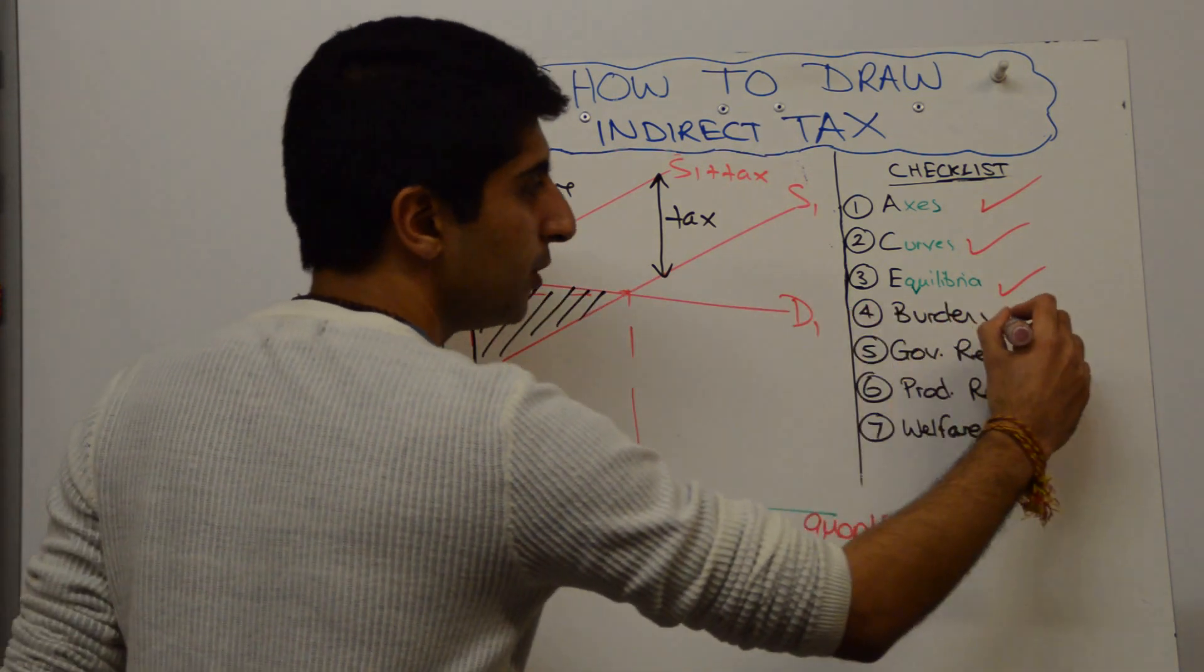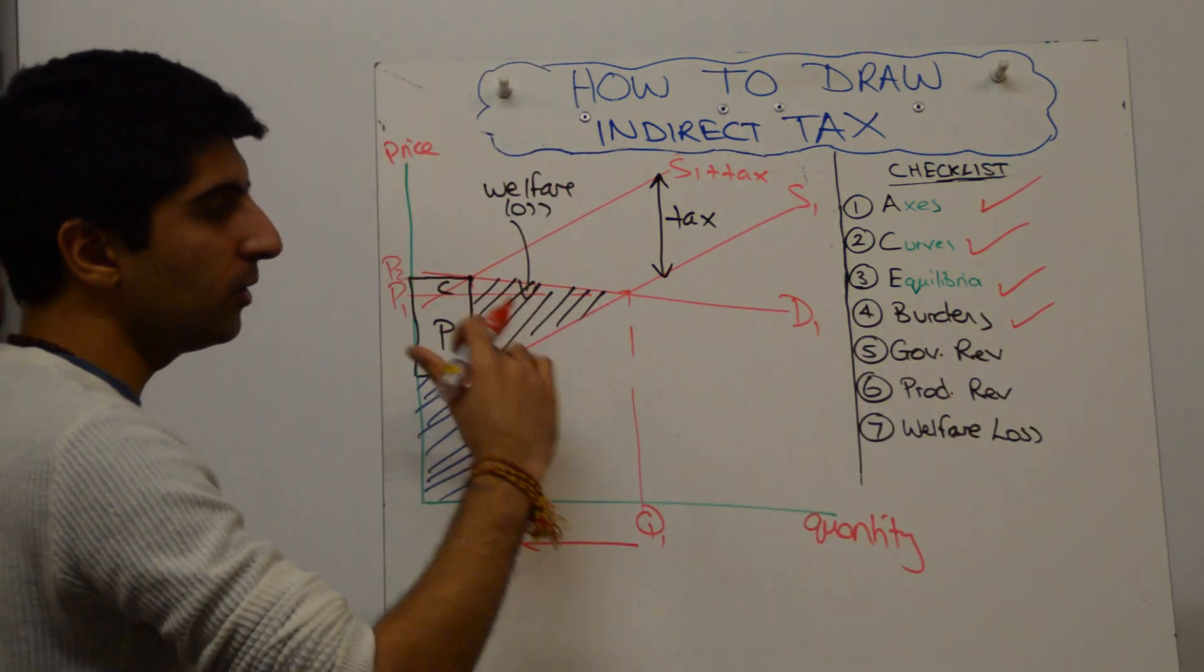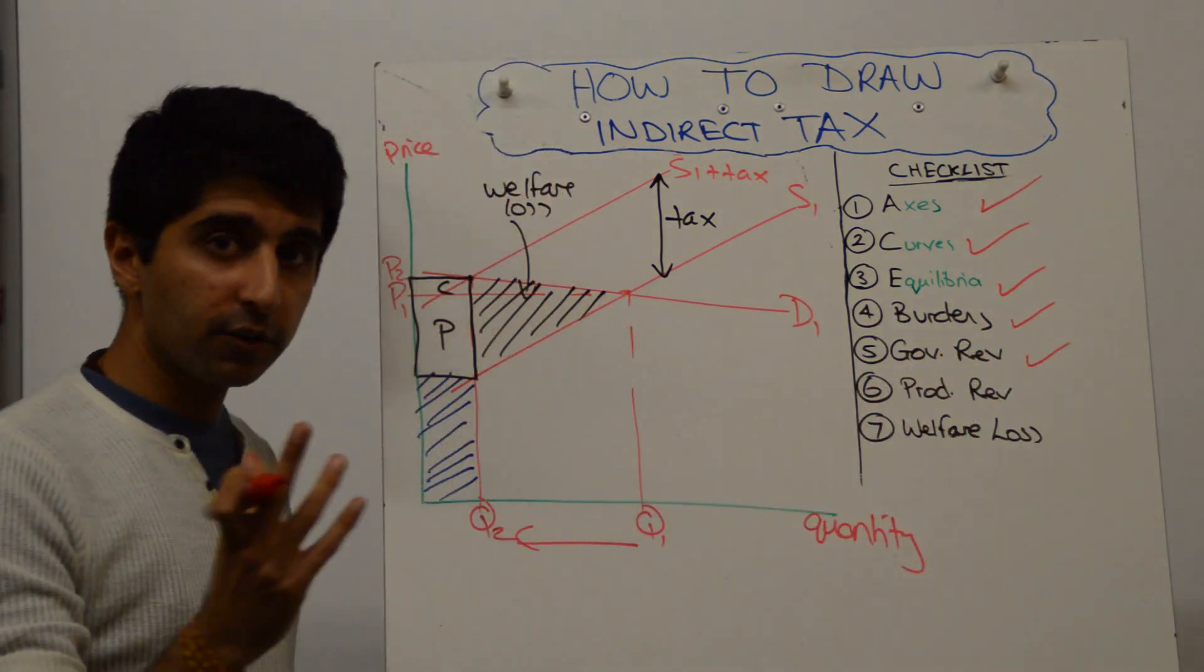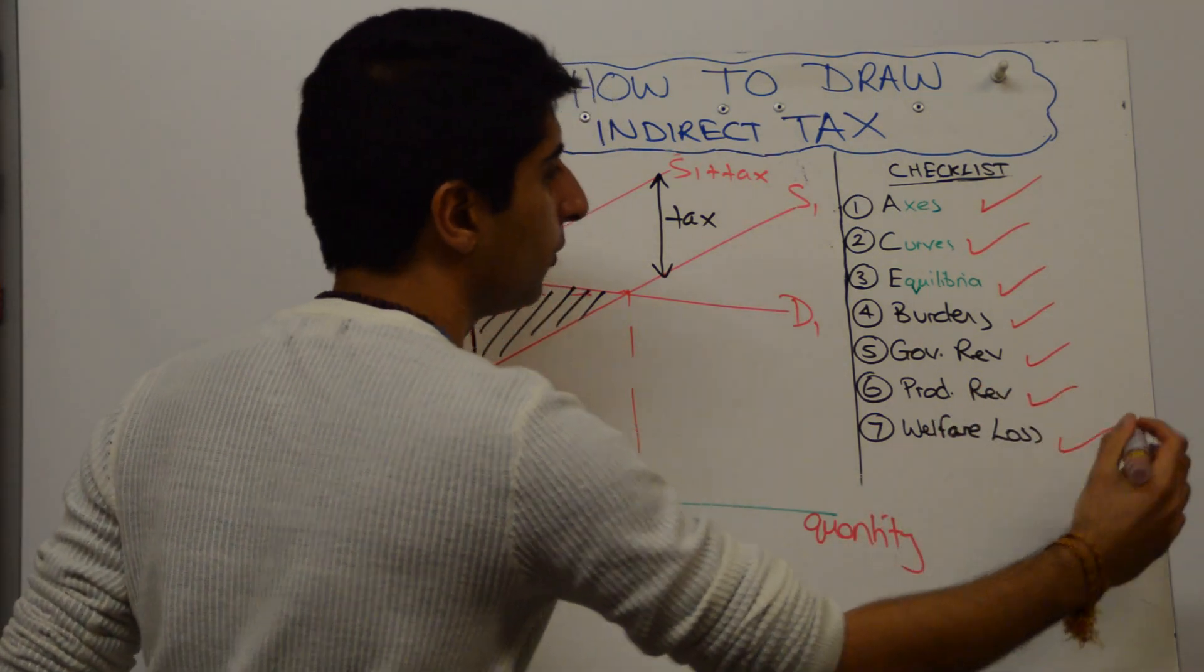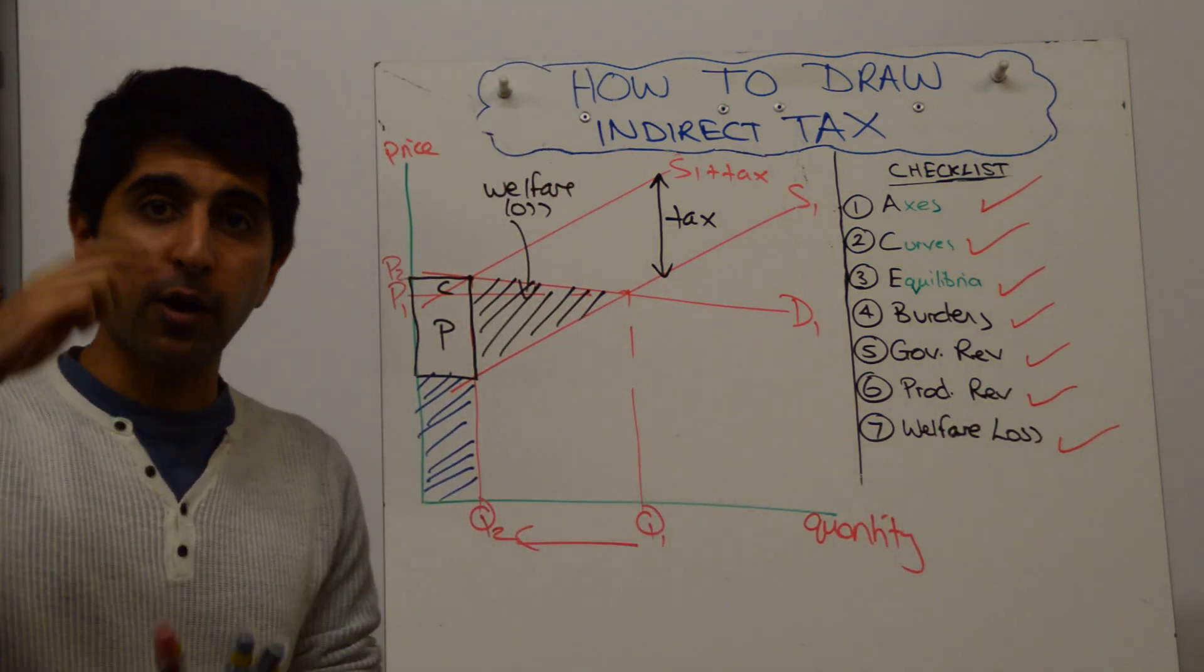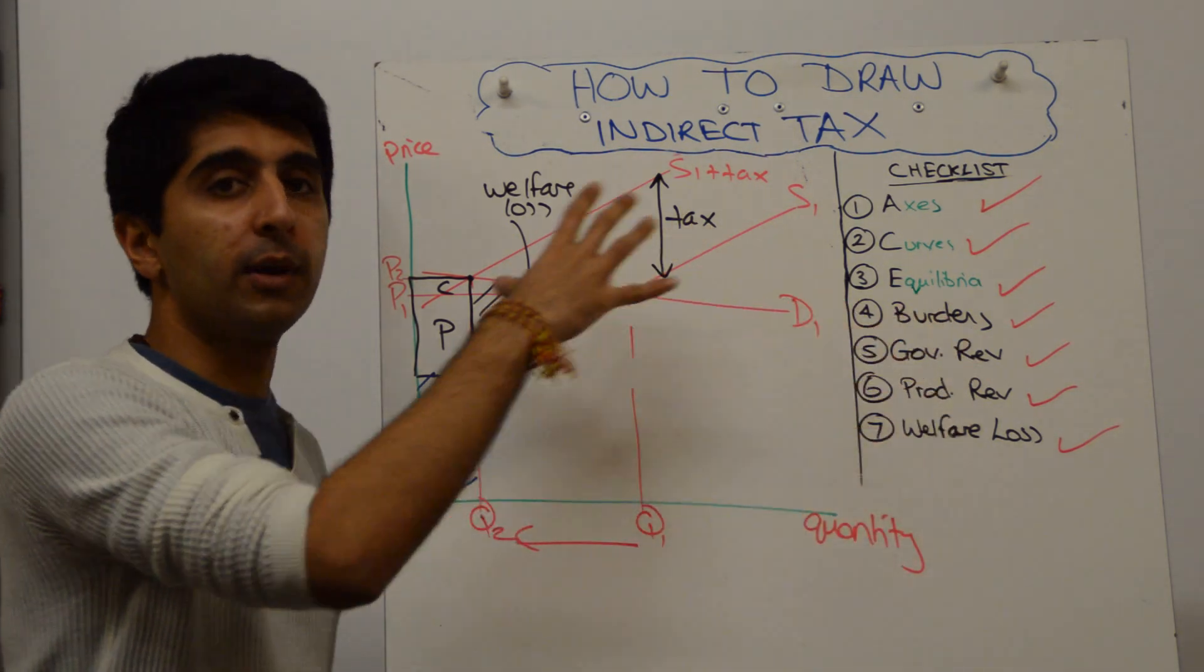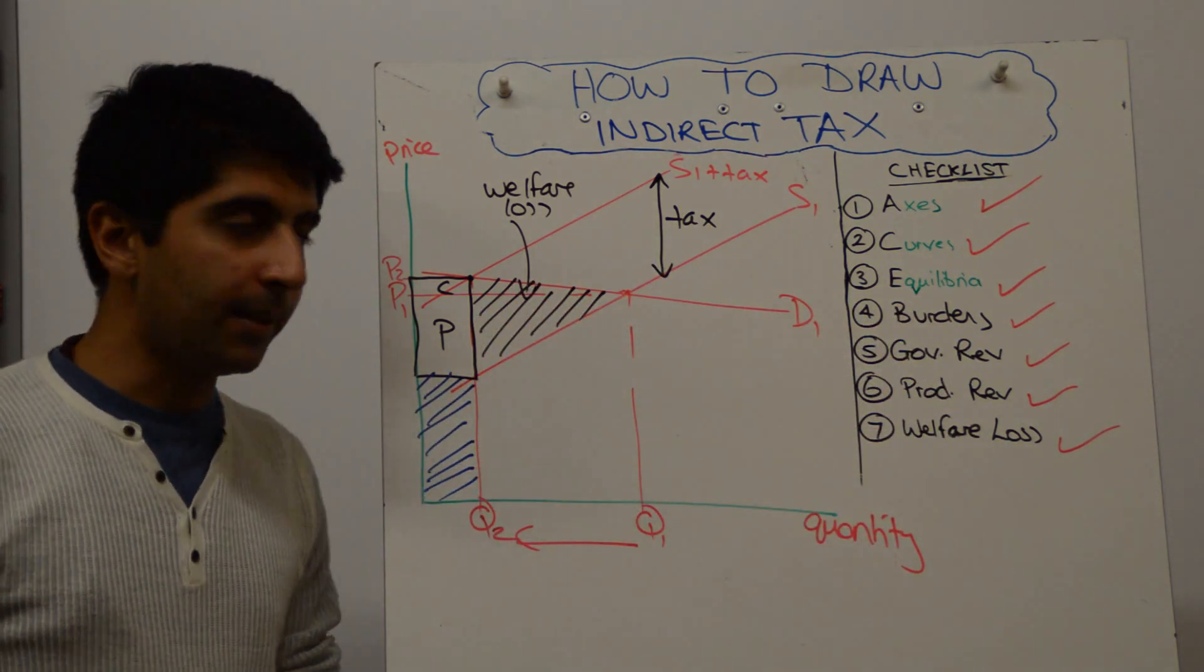Burdens. Yeah, we've got the burdens on here. Producer and consumer burdens. The revenue was neatly done with the box. That was shown. The producer revenue was always shown. And the welfare loss was always shown. So all the key things we had in our head, in terms of what we needed to include on the diagram, were labeled. Instead of shading, you might have wanted to use letters to label these things, but we did it fine anyway.